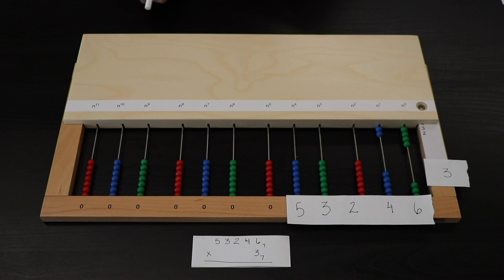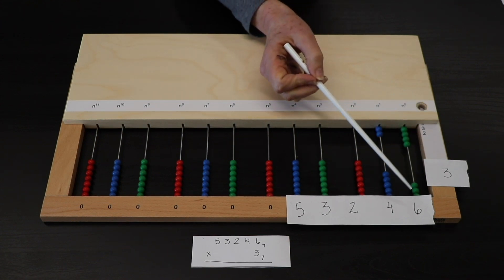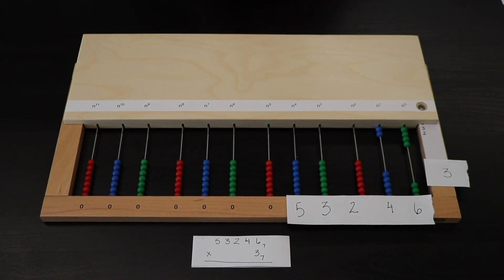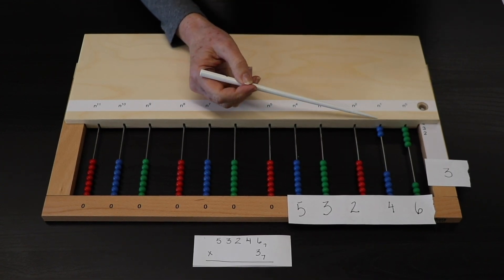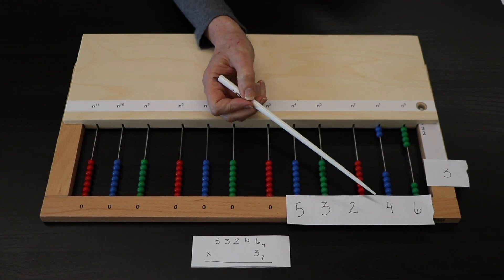Or, once the child becomes facile with using the multi-bead frames in different bases, they can say 6 times 3 is 18. 18 in base 7 is 2, 4.